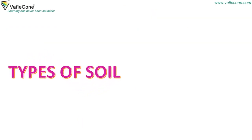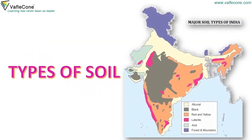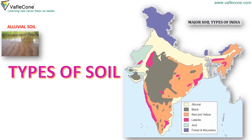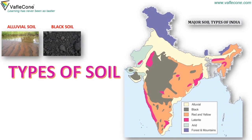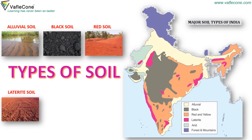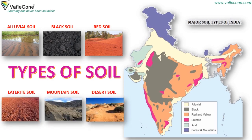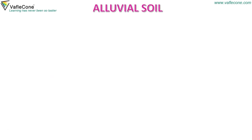Types of soil. There are different types of soil such as: alluvial soil, black soil, red soil, laterite soil, mountain soil and desert soil. Now let's discuss alluvial soil.